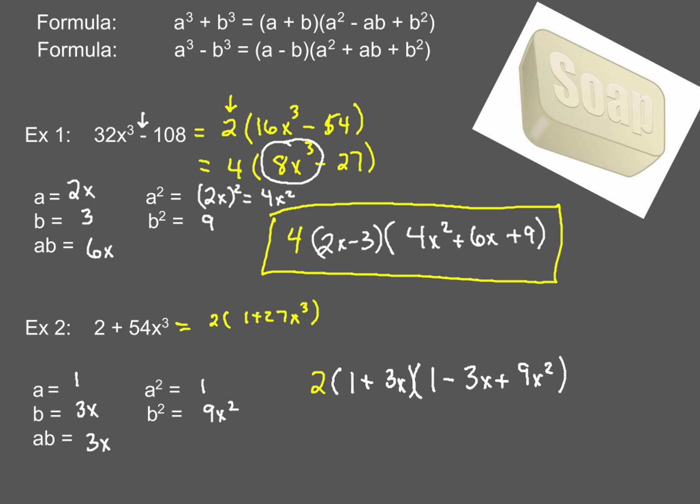So, how did you do with that one? Hopefully, you were able to correctly determine the values of a, b, ab, as well as a squared and b squared to come up with the final answer of 2 times the quantity 1 plus 3x times the quantity 1 minus 3x plus 9x squared. Now, remember, SOAP, first piece is always the same, middle term is opposite, and the last term is always positive. So, SOAP, make sure you follow the rule for SOAP and fill in your formula correctly because your formula is not always going to be right in front of you. So, do make sure you get that memorized.